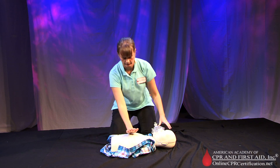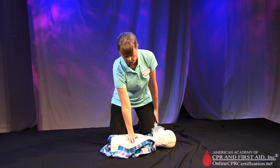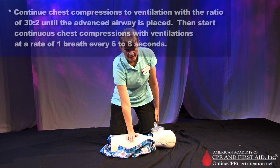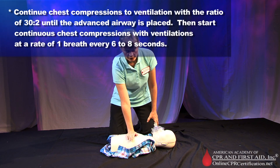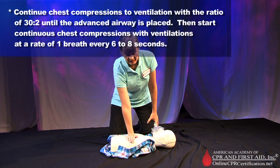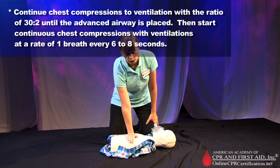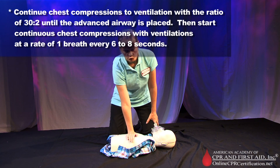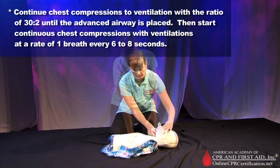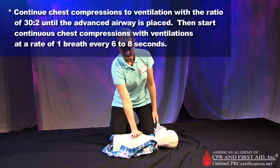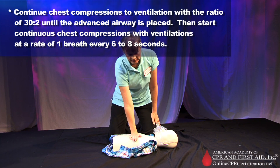Try to limit interruptions in chest compressions to less than 10 seconds. Continue 30 compressions followed by two ventilations — a ratio of 30 to 2 — until an advanced airway such as a tracheal tube, combi tube, or laryngeal mask airway is placed.